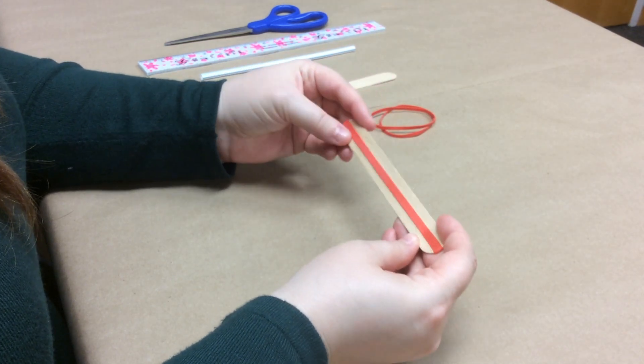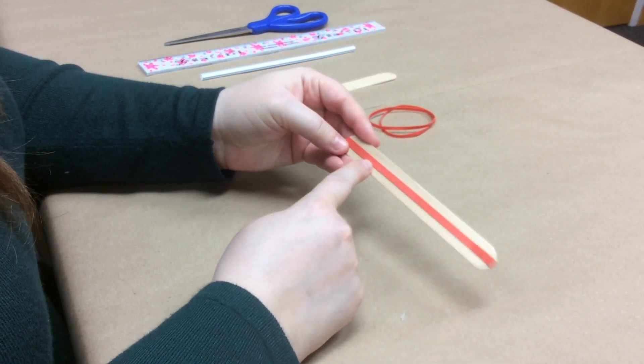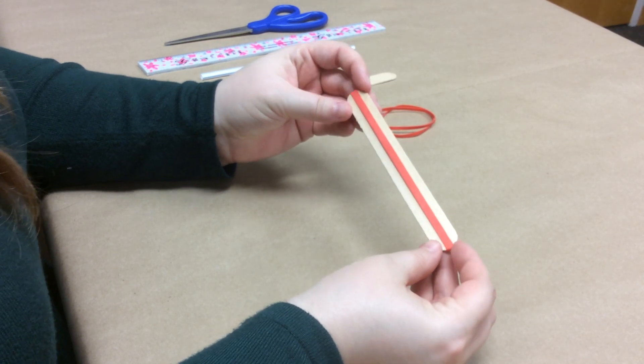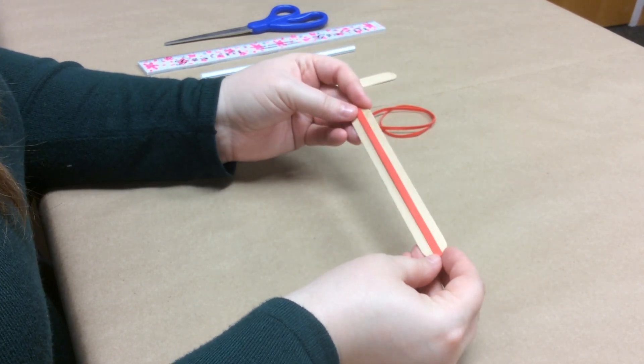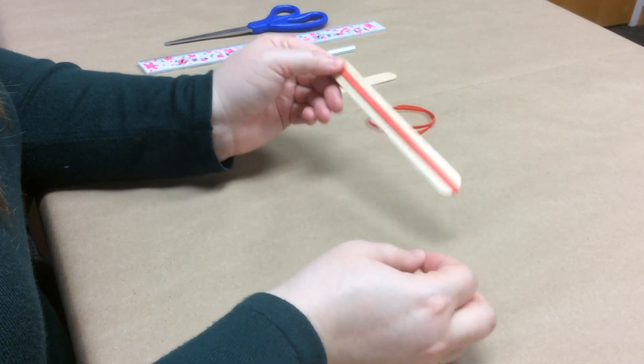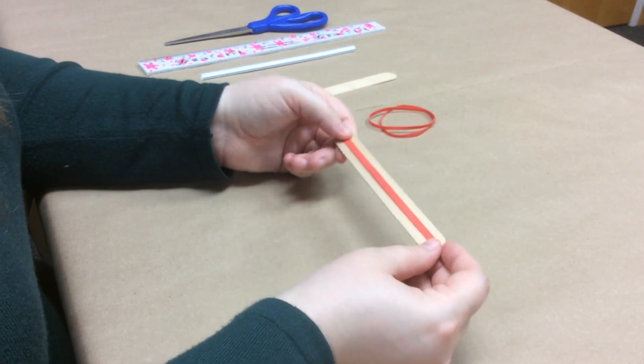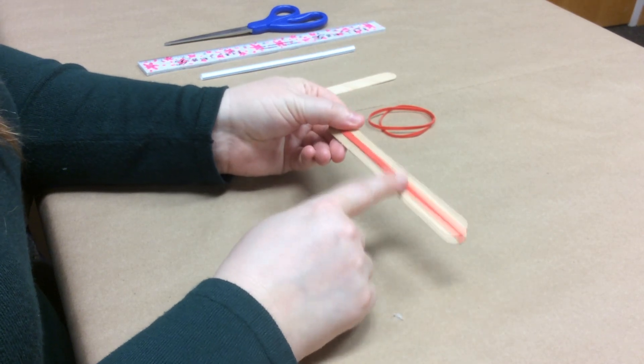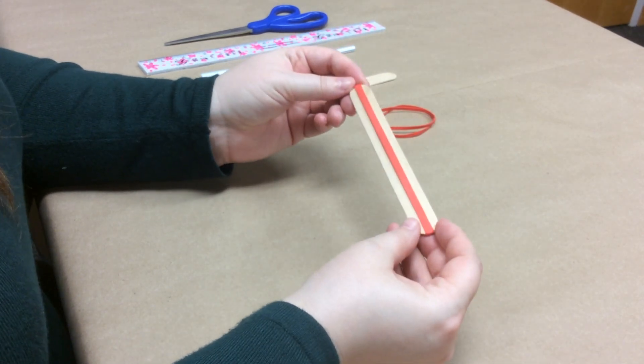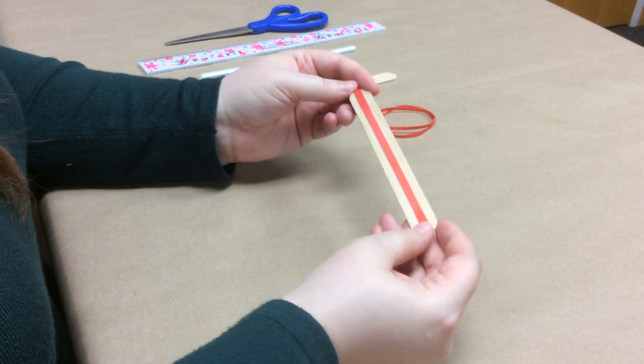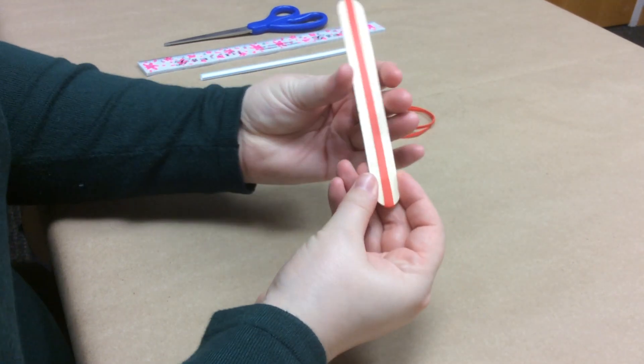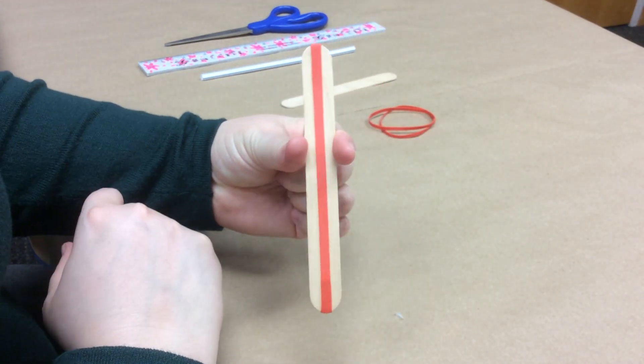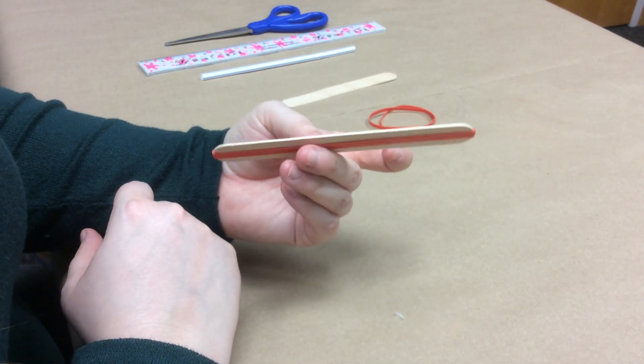Sometimes when you do this, one side winds up more stretched than the other. So just double check that they are both stretched about the same. If one side is stretched more than the other, just pull on it and adjust it. So take some from the less stretched side and pull it over to the more stretched side, if that has happened to you. It does not always happen. So you want your rubber band stretched across your popsicle stick like this.